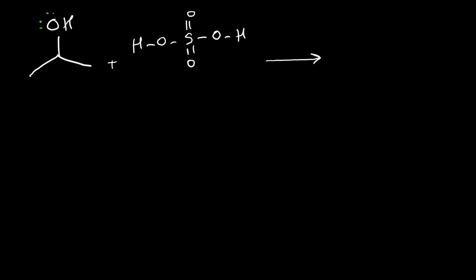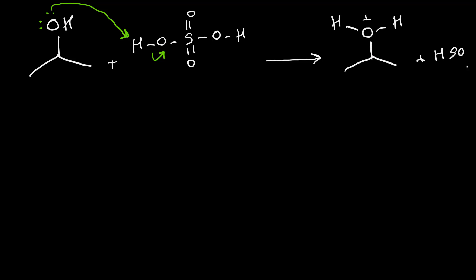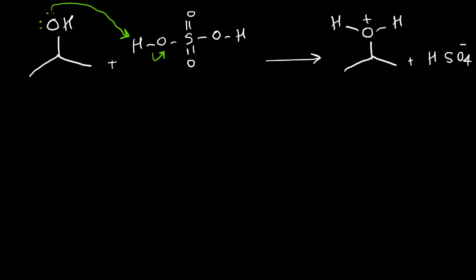The hydroxy group in alcohol has a lone pair, so this hydroxy group can play the basic role and take one proton from sulfuric acid. Then we have protonation of the alcohol and also the anion for sulfuric acid. This OH₂⁺ group, or oxenium ion, is an outstanding leaving group and easily leaves the structure to produce water.